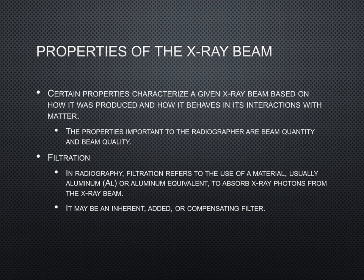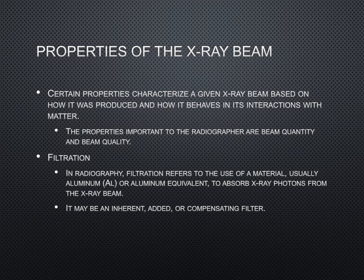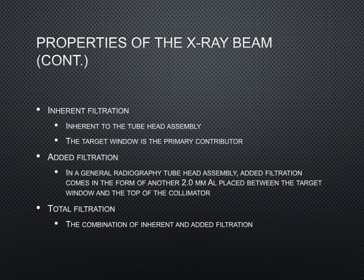Certain properties characterize any given x-ray beam based on how it was produced and how it behaves in its interactions with matter. The interactions with matter are covered in detail in my video about Chapter 7, Interactions with Matter. The properties that radiographers should be familiar with are beam quantity and beam quality and the defining terms of each. Before we get to that, a discussion of filtration is in order. In radiography, filtration refers to the use of a material — usually aluminum or an aluminum equivalent — to absorb x-ray photons from the x-ray beam. This filtration may be in the form of an inherent, an added, or a compensating filter.